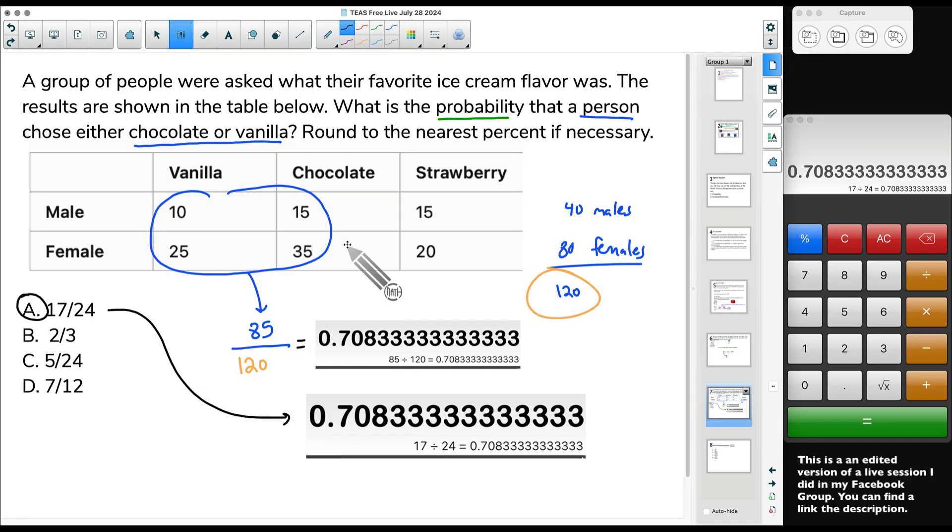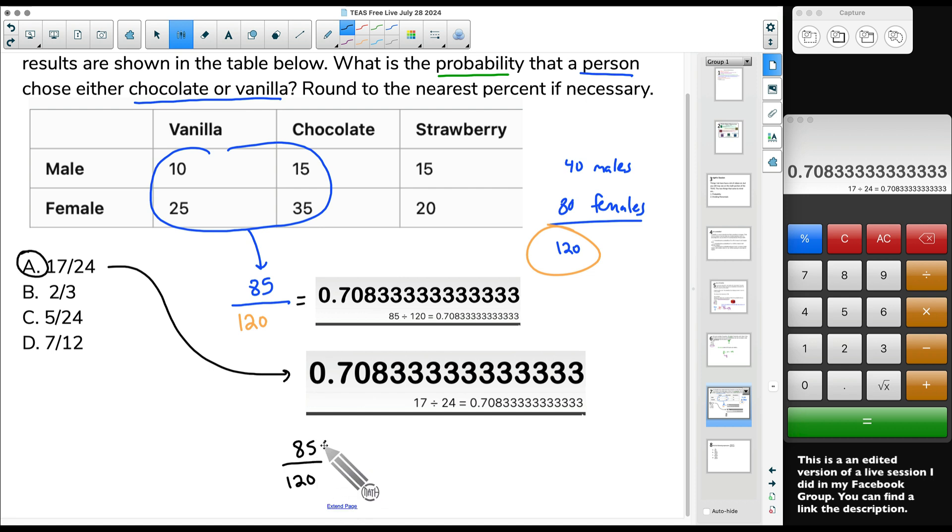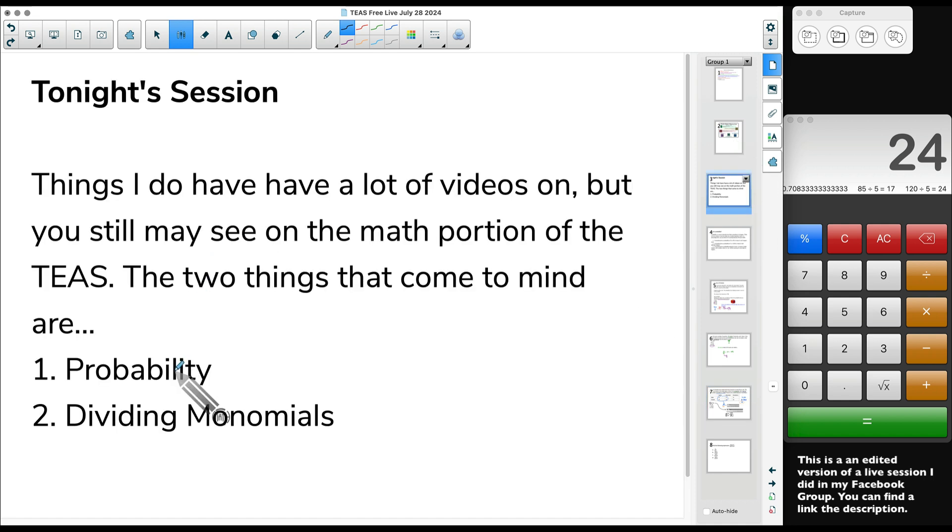Some of you may have simplified, which is fine. So 85 divided by 120. I'm going to divide the numerator and denominator by 5. What is 85 divided by 5? 17. By the way, how did I know I could do that? Because both of these numbers end in either 5 or 0. That is a divisibility rule. If a number ends in a 5 or 0, guaranteed, you can divide it by 5. So let's take that 120 divided by 5 and we get 24. And there's that same fraction, which is why we got the same decimal. So I did mention two things tonight, and that was probability, which is what I've spent the most time talking about tonight, dividing monomials.